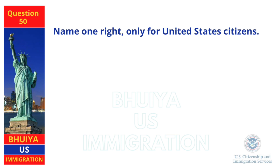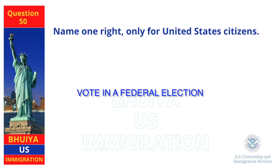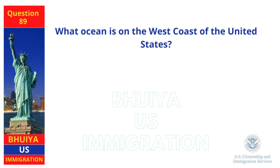Name one right only for United States citizens. Vote in a federal election. What ocean is on the west coast of the United States? Pacific Ocean.